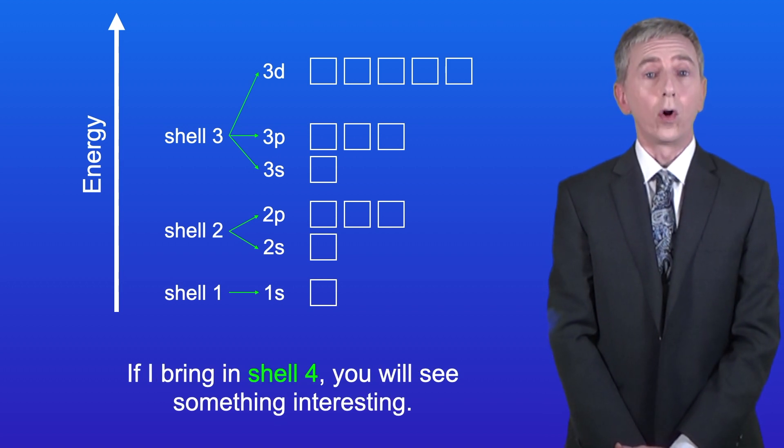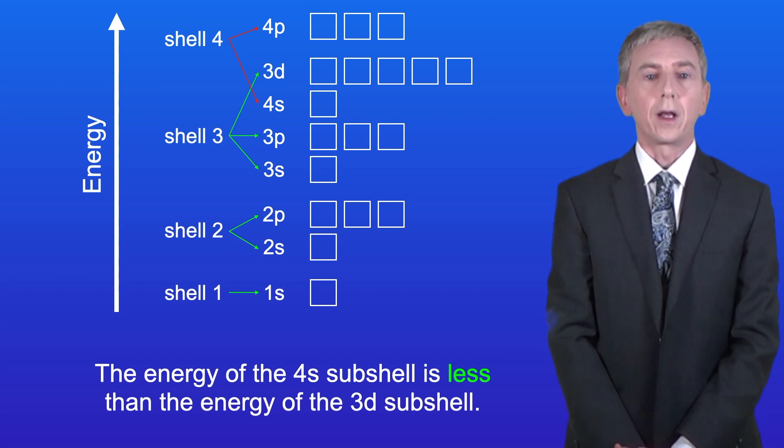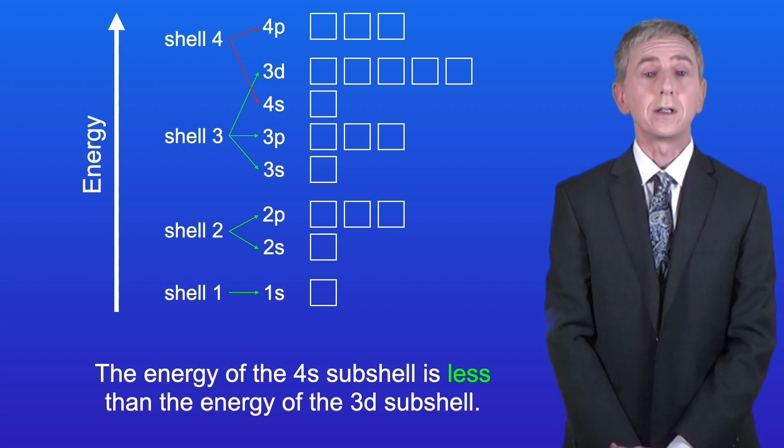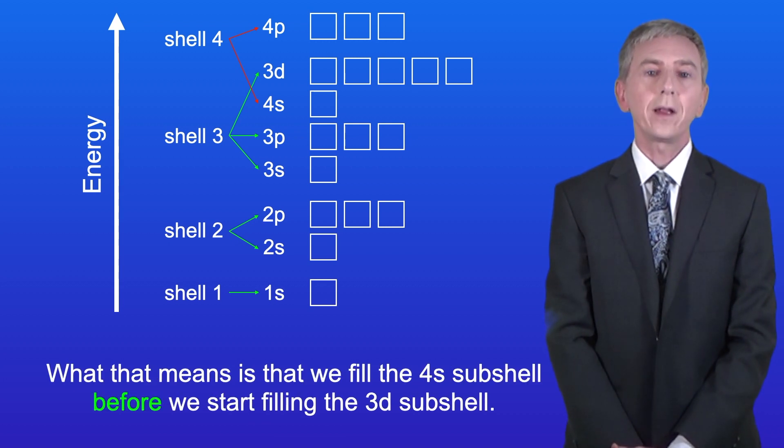Now if I bring in shell 4, you'll see something interesting. The energy of the 4s-subshell is less than the energy of the 3d-subshell. What that means is that we fill the 4s-subshell before we start filling the 3d-subshell.